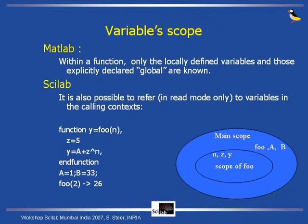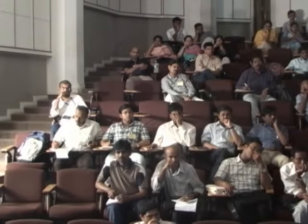There are also differences in variable scope within functions. In MATLAB, within a function, only the variables locally defined in the function are known. You can also declare some variables explicitly as global, so many functions can share them, and the top level can share this variable too, but you must declare them global anywhere you want to use them.